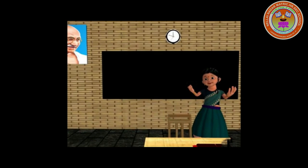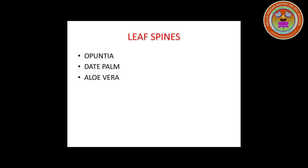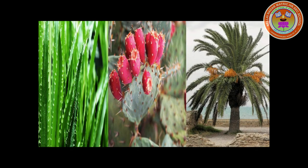Next function: Leaf modified into Spine. Leaves of certain plants become wholly or partially modified for defensive purposes into sharp pointed structures known as spines. Example: Opuntia. In Opuntia, axillary buds are modified into spines. In the date plant, the leaf apex is modified into spines. In the commonly known Aloe vera, spines develop on the margin as well as at the apex.